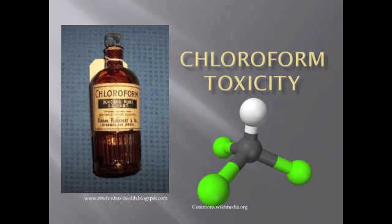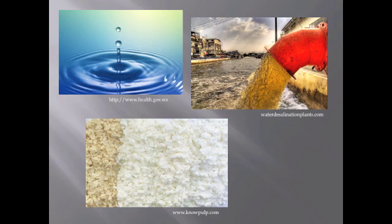Chloroform, also known as trichloromethane, is a colorless, volatile liquid with a pleasant, non-irritating odor. Chloroform is both a synthetic and naturally occurring compound, although most chloroform found in the environment is made industrially as a byproduct of water, sewage, and pulp chlorination.